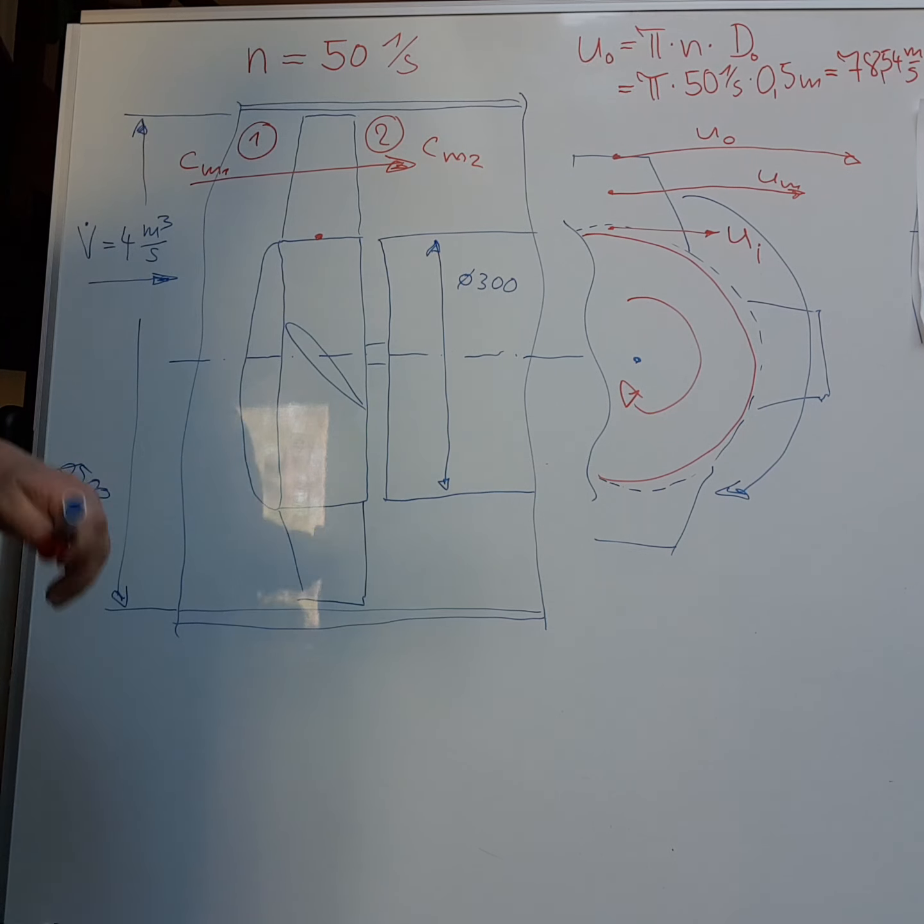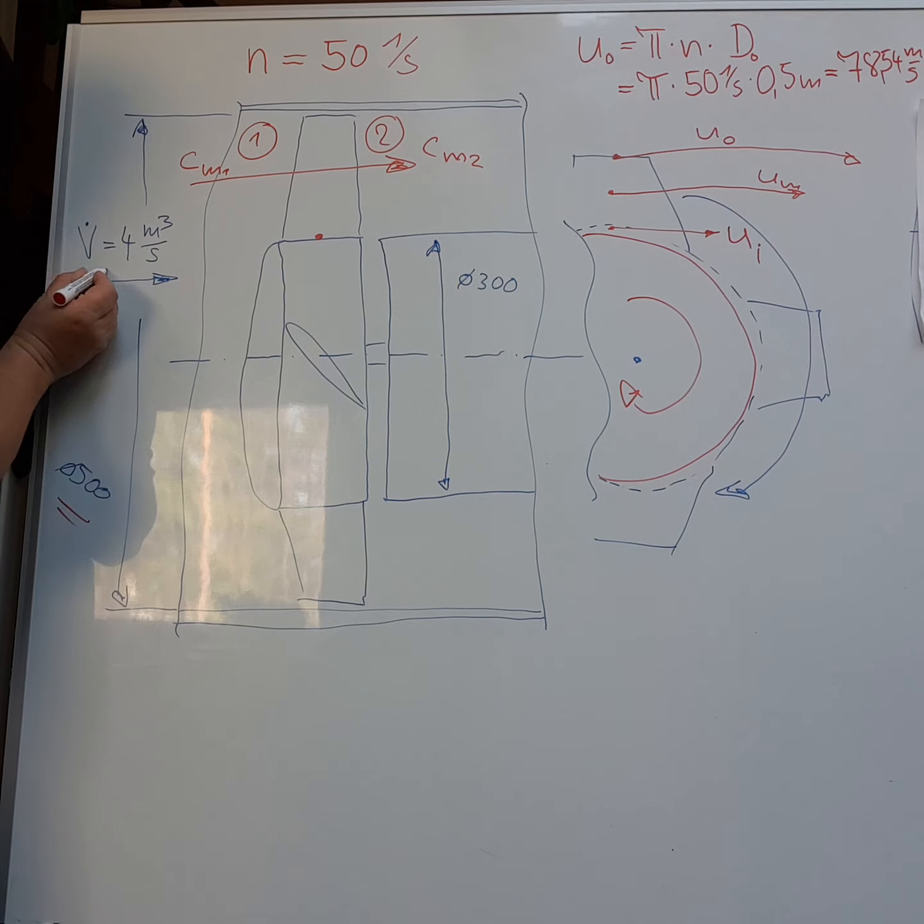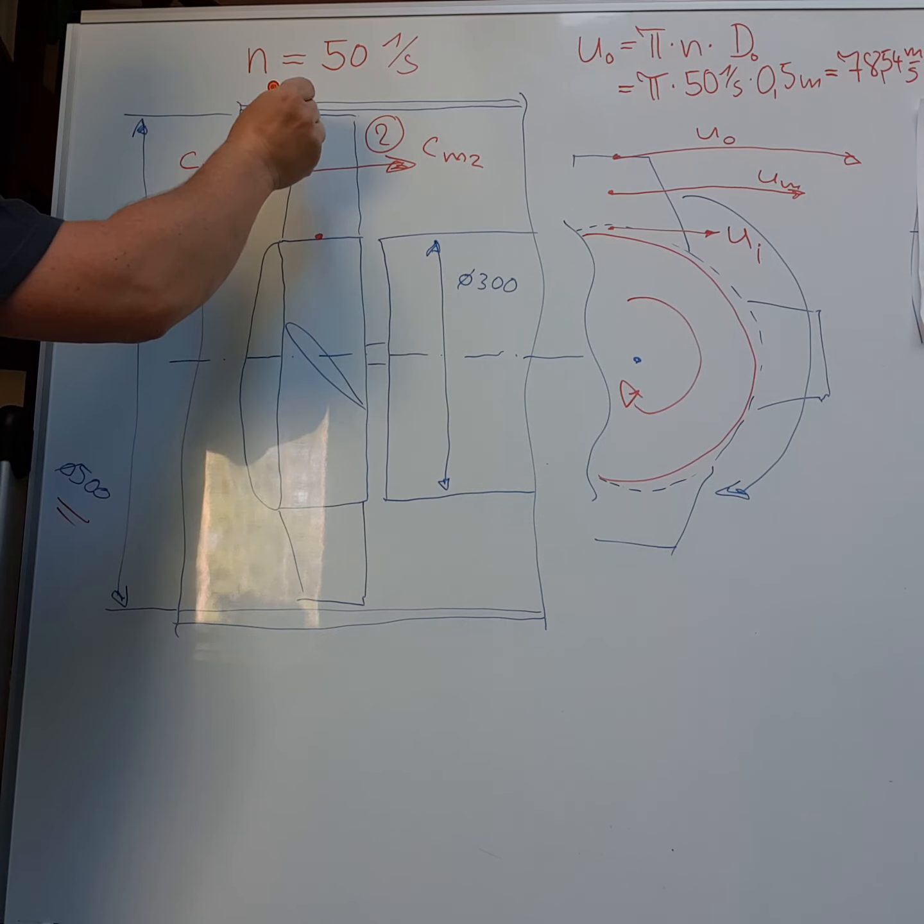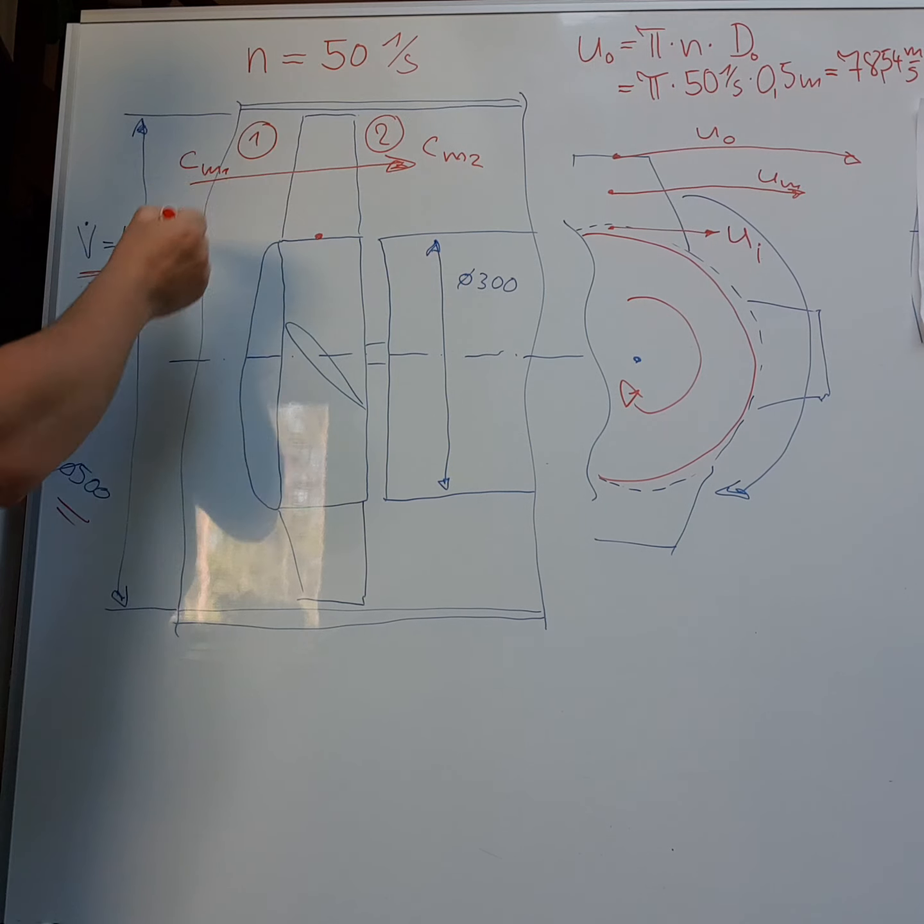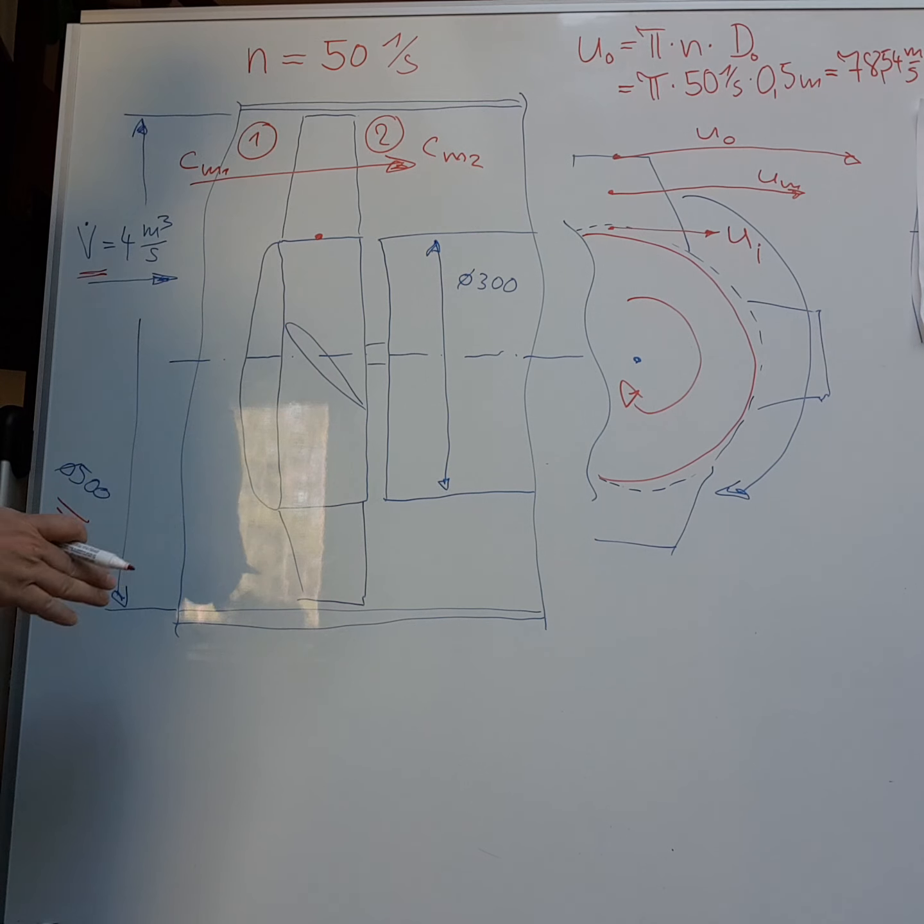So how can we calculate this C value, this velocity value? It is not so difficult because we have the volume flow of the air, 4 cubic meters per second. And if we know the area of this duct, of this pipe, then we can divide the volume flow by the area.